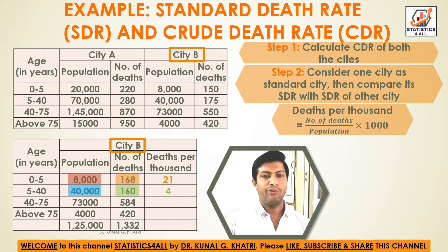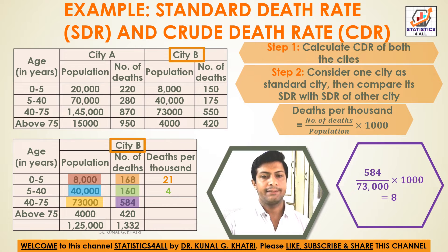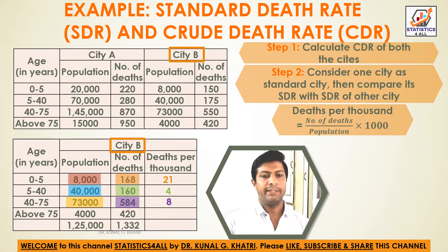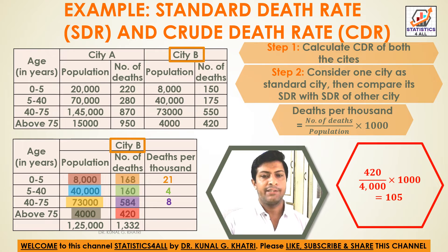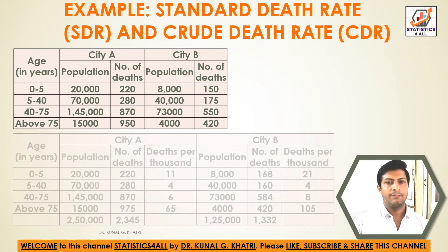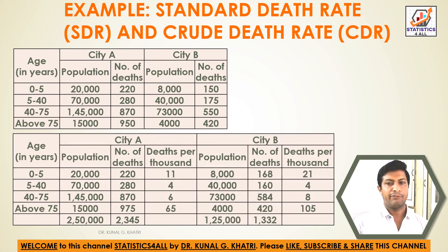Continuing city B: 584 divided by 73,000 gives value 8. And 420 divided by 4,000 gives value 105.5. After finding deaths per thousand for both cities, we proceed to the next step.